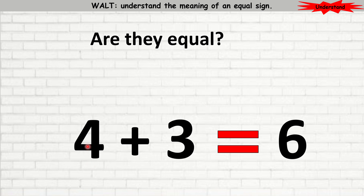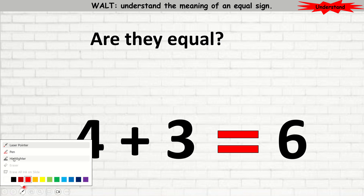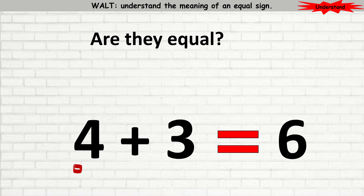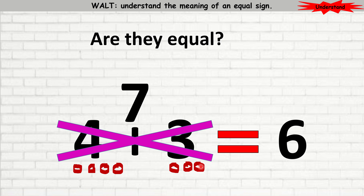Now we have the equation 4 plus 3 is equal to 6. I want to know, are they equal? Is the left side equal to the right-hand side? You can draw circles or use the count-up method, whichever you feel comfortable with. I'm going to draw circles: here I have 4 circles, and I have 3 circles. If I add them all up, 4 plus 3 is 7. Is 7 equal to 6? No, 7 is not equal to 6. So are they equal? No, they are not.